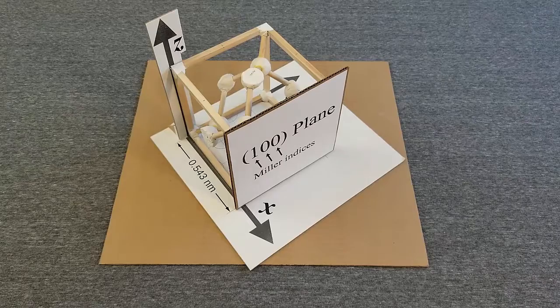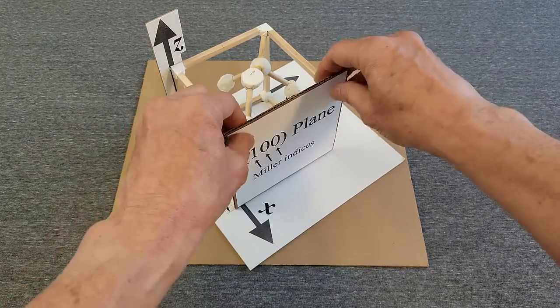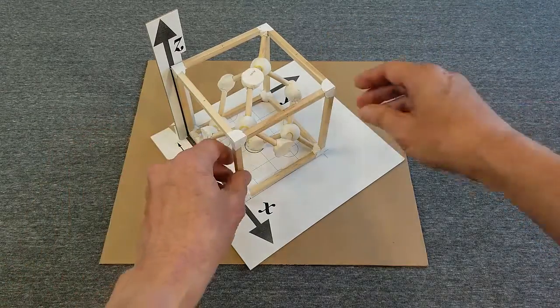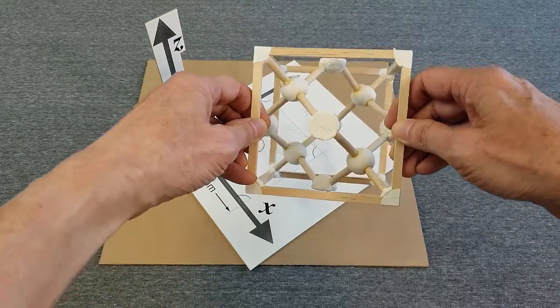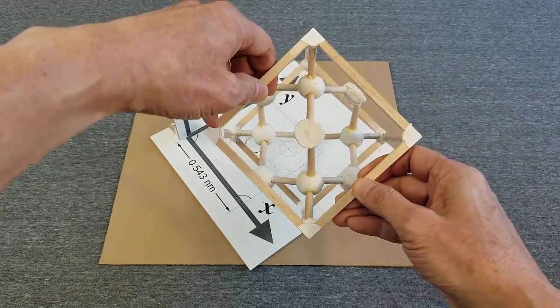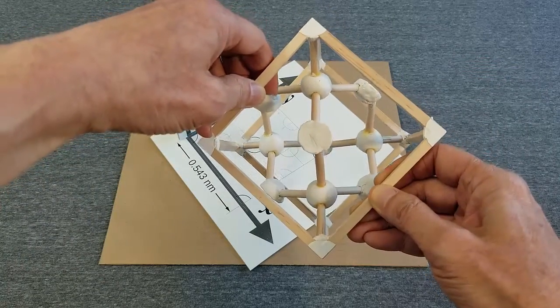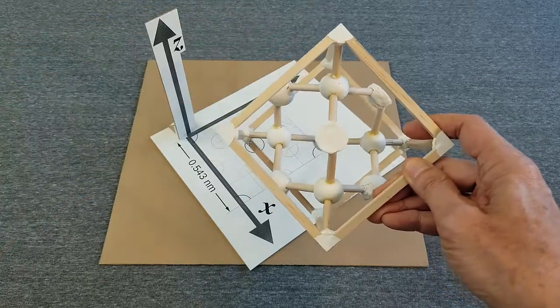Let's look in the 1-0-0 direction, meaning perpendicular to the 1-0-0 plane. With the cube turned 45 degrees, the atoms line up in neat rows and columns.